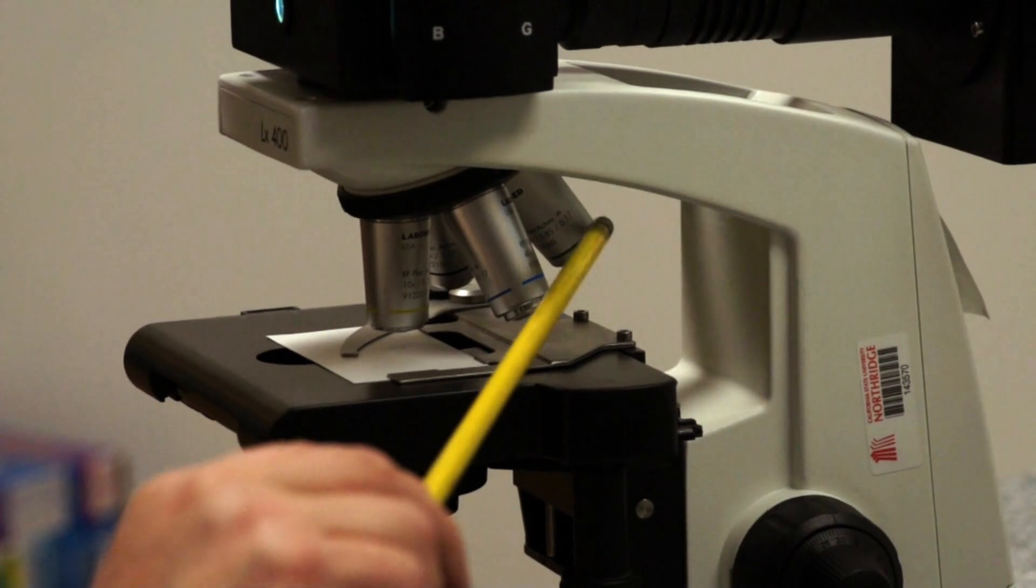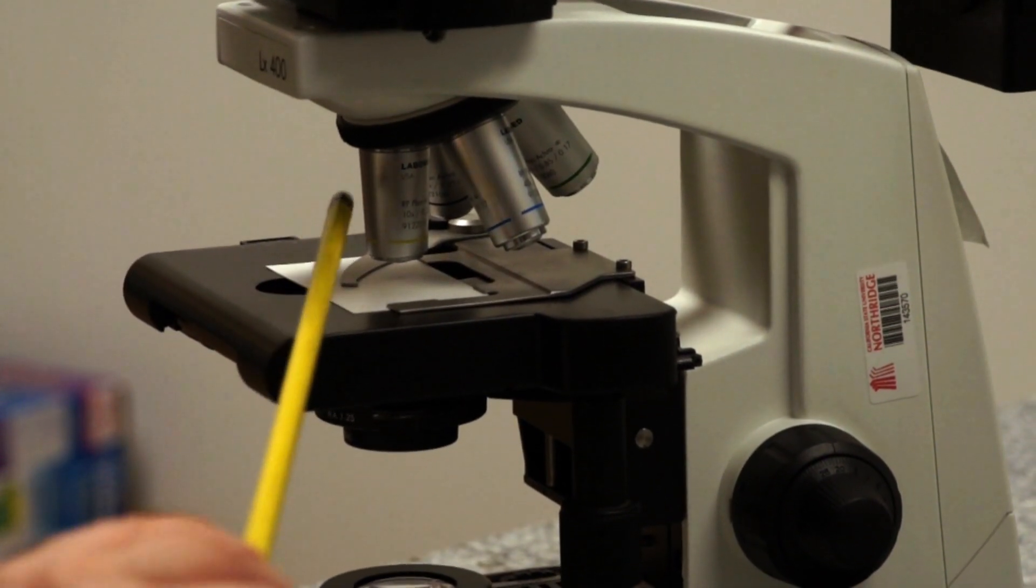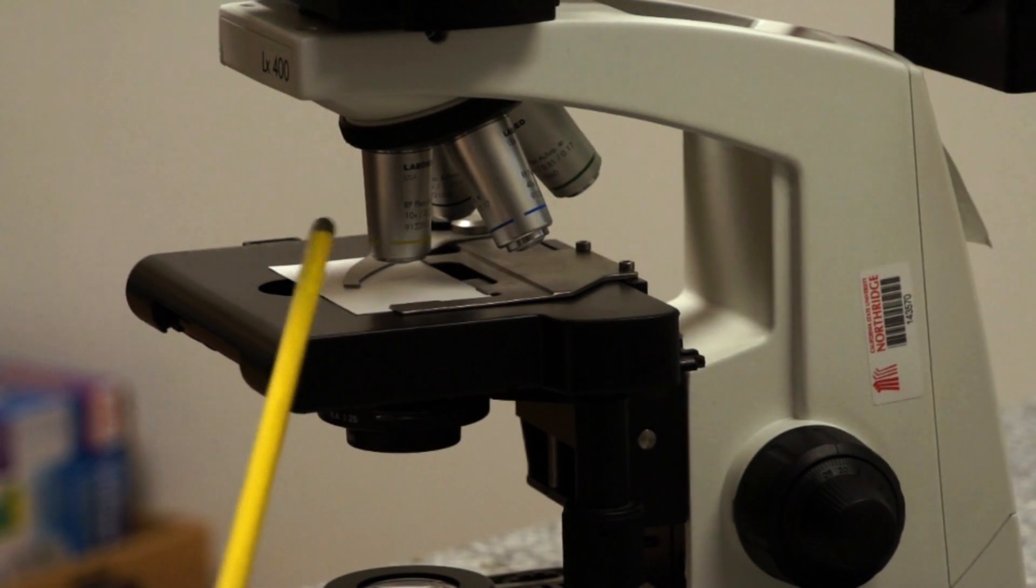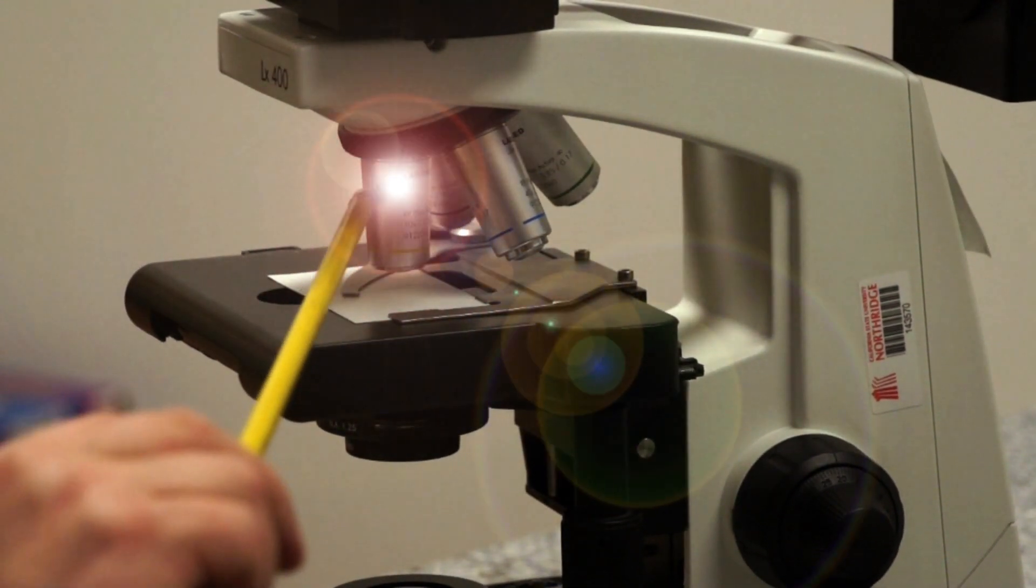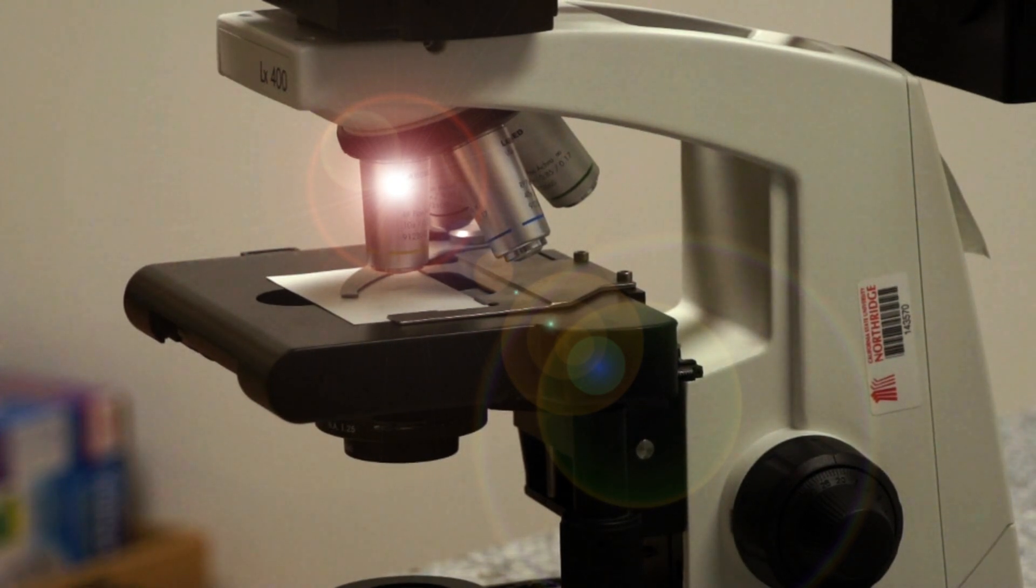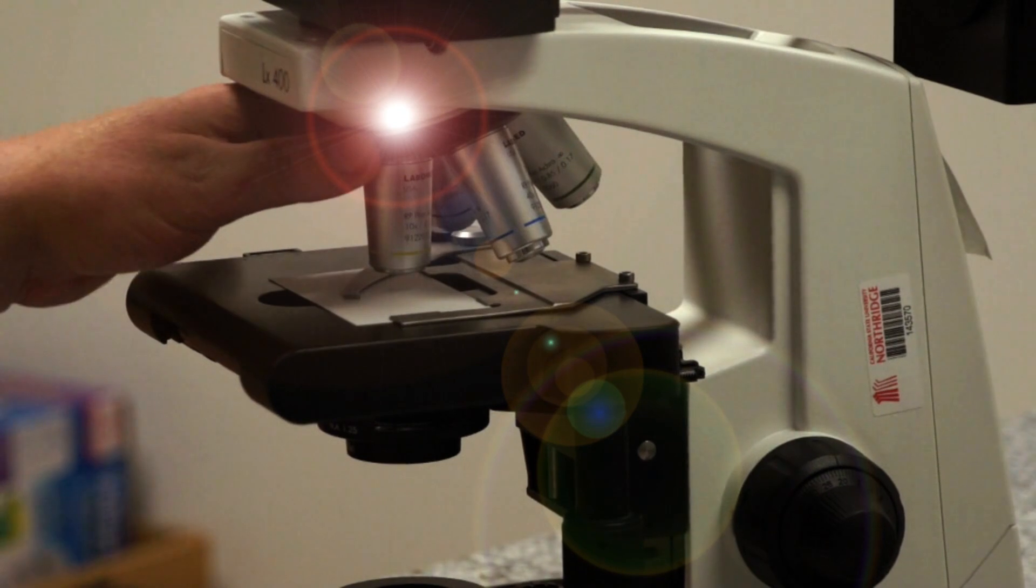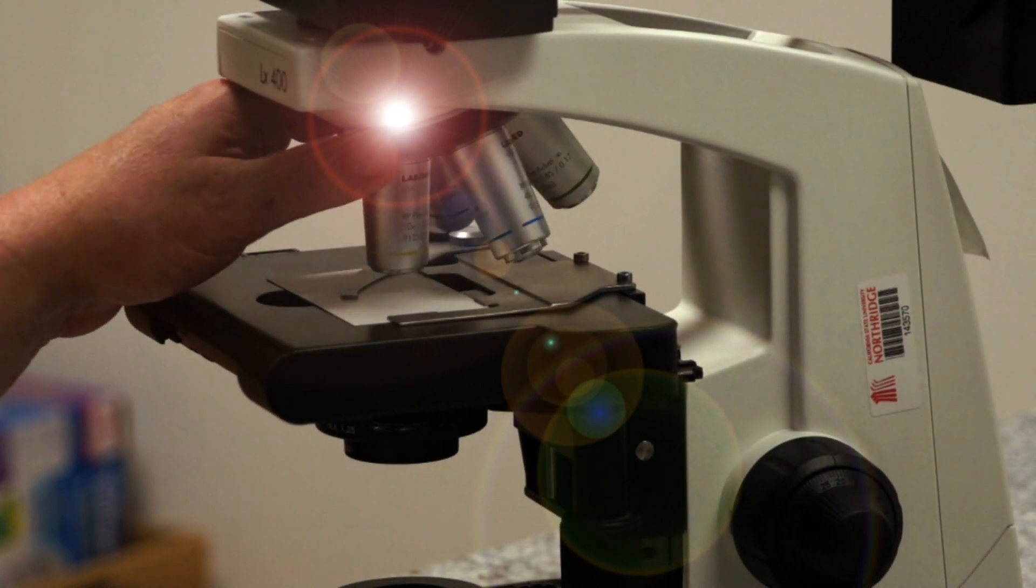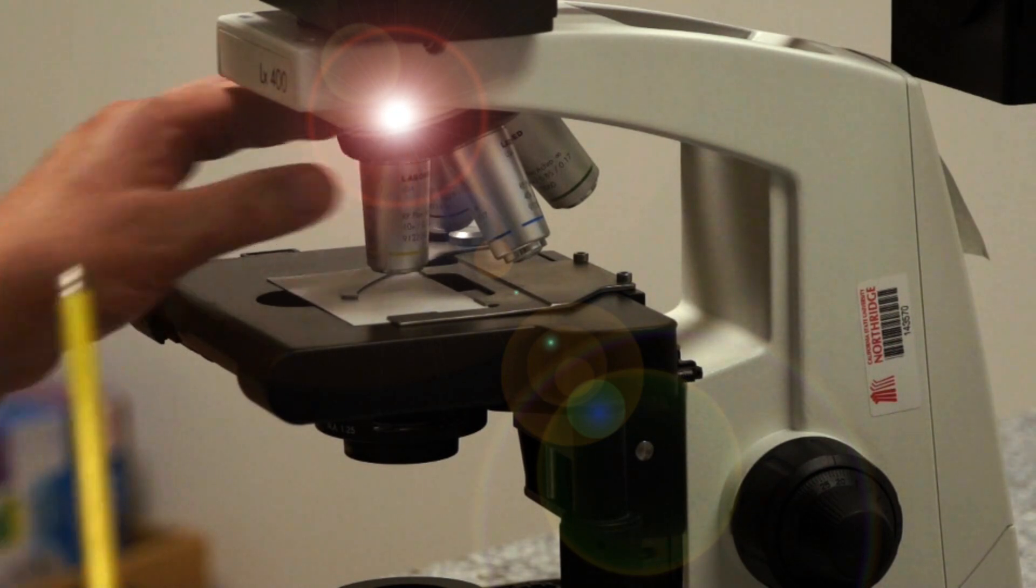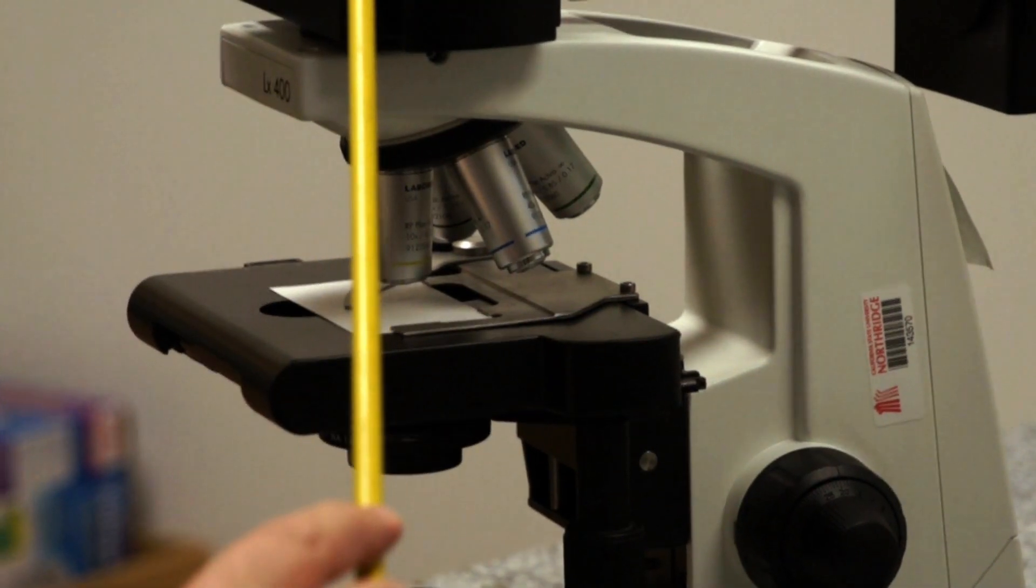Each of these is an objective. Each one is highly corrected for the magnification that it produces and the resolution. We'll be discussing that more later. Then the light travels through the objective where all the useful magnification takes place. It goes into the nose piece and you rotate the objectives by holding the nose piece on the knurled rubber band.